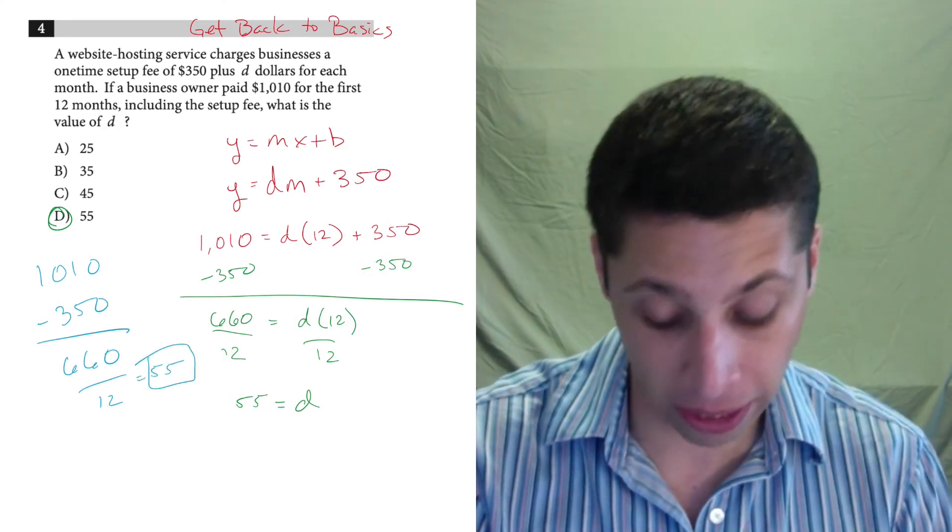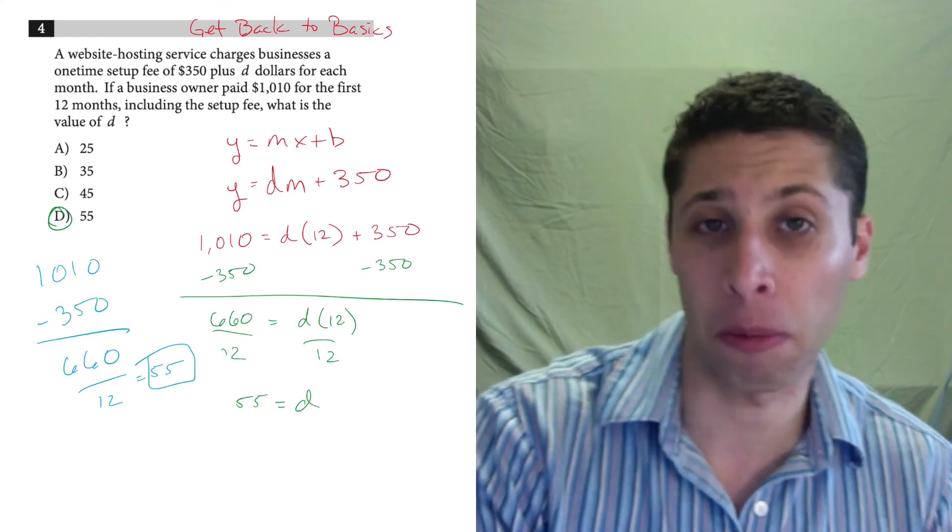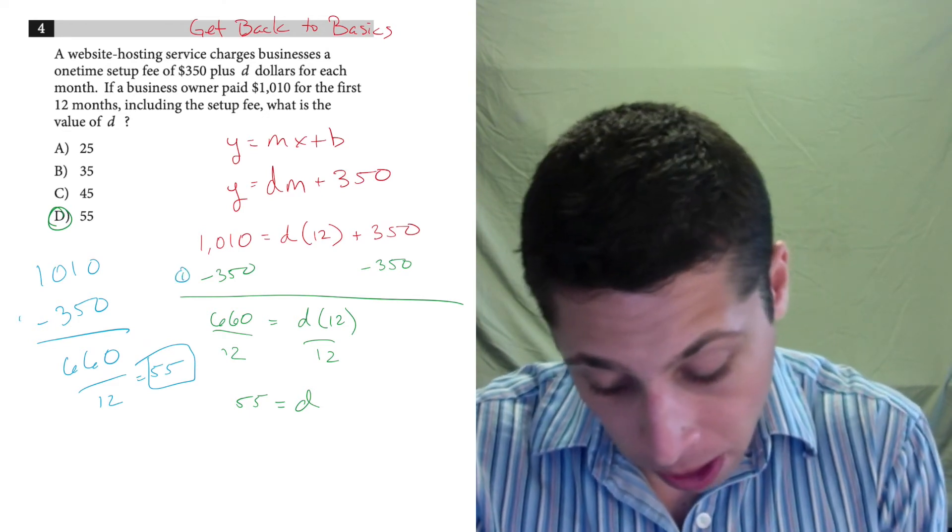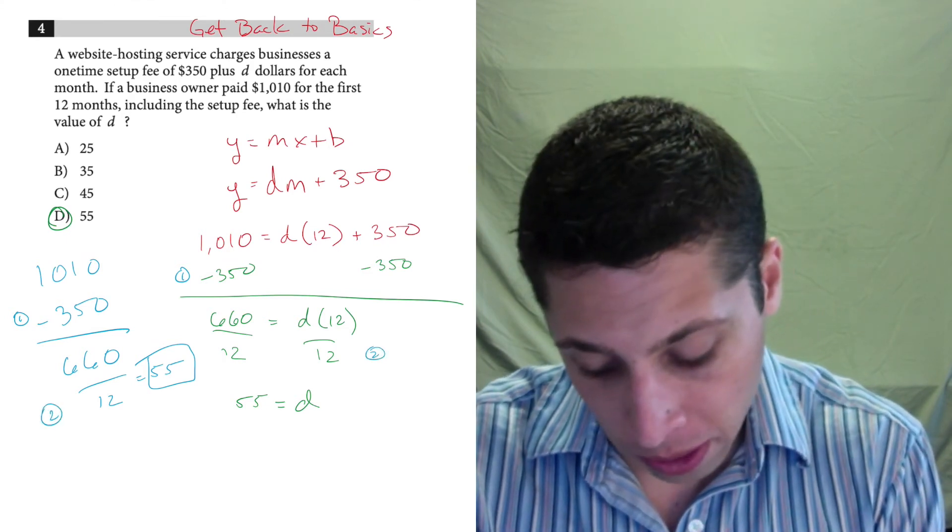You could do that without overthinking lines, but notice that what arithmetic I just did is the same arithmetic that we did solving the linear equation. We subtracted 350, step one, and then we divided by 12, step two.